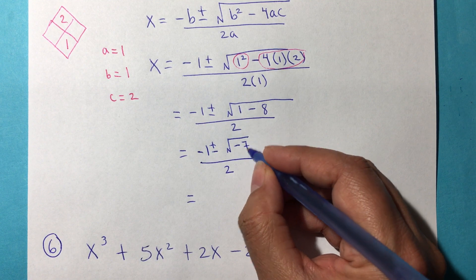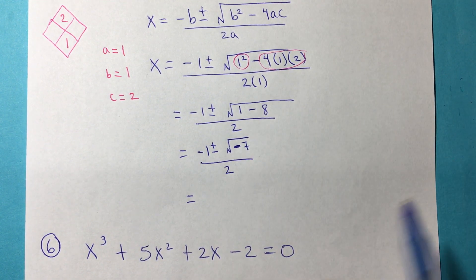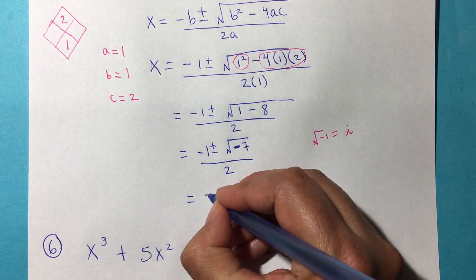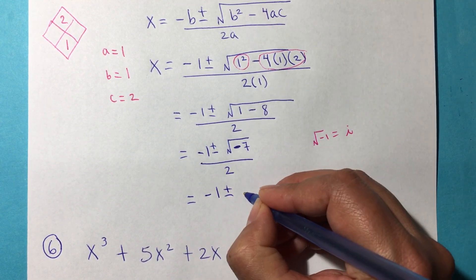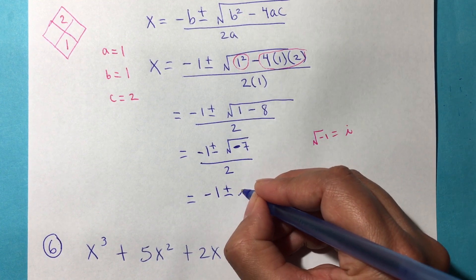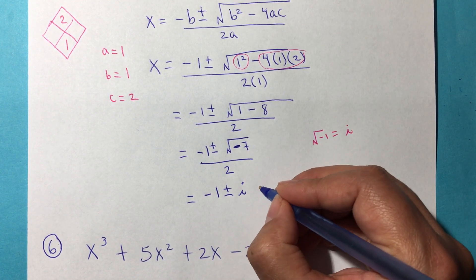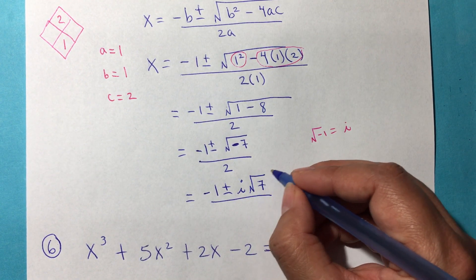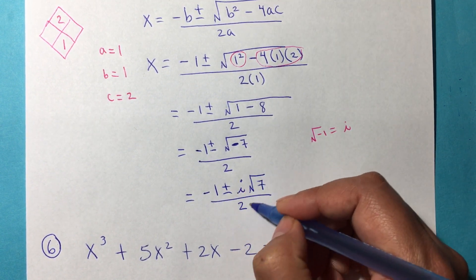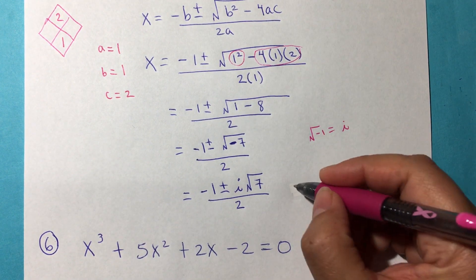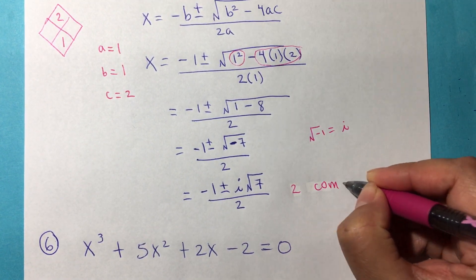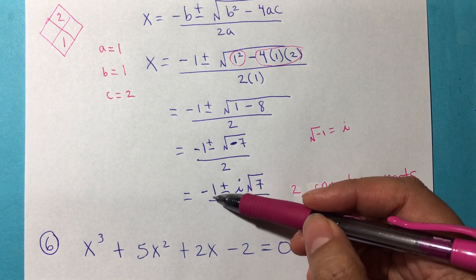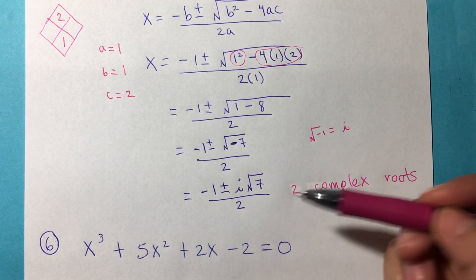We cannot get the square root of 7, but we can get the square root of negative. Remember the square root of negative 1 is always i, the imaginary number. We end up with two complex solutions because we have -1 ± i√7 / 2. We cannot simplify anything else. These are two complex roots.